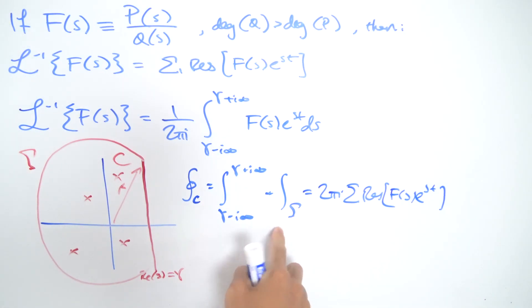So if this integral over Γ vanishes in the limit, that means that the integral we're evaluating, this specific integral, is just 2πi times the sum of all the residues. And that's exactly where this formula comes from.